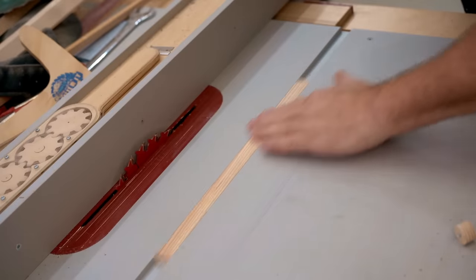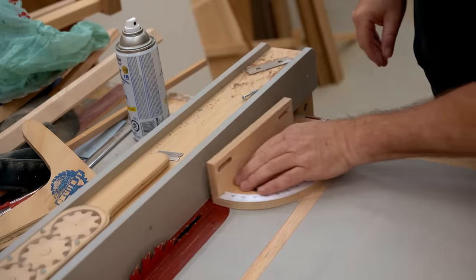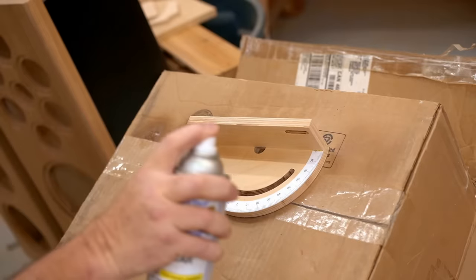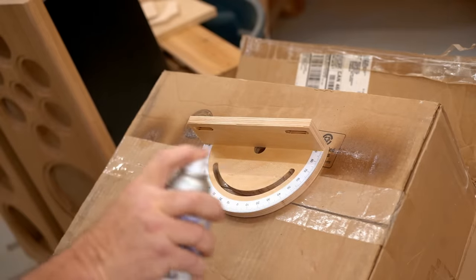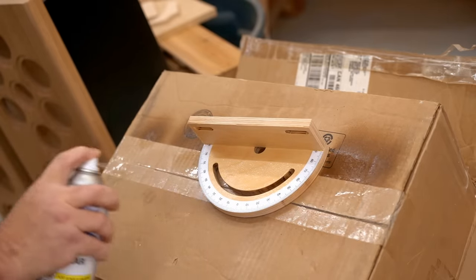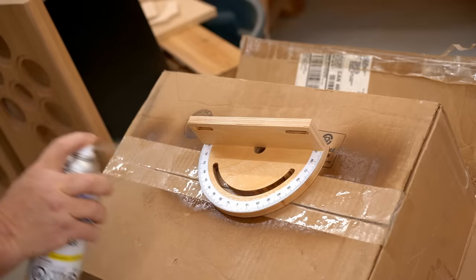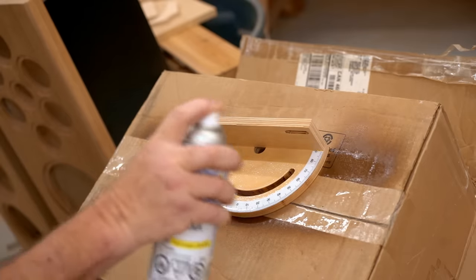Next I want to get some clear finish sprayed on here to protect the paper scale, but it's also a good time to check to make sure that the sub fence is square. Since I know my table saw fence is absolutely square, I'll slide it up against that to check.